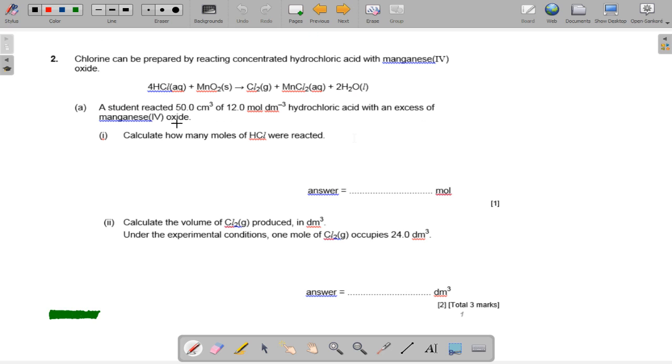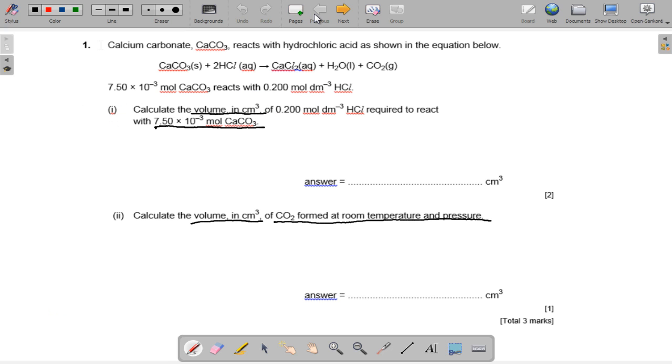We need to calculate how many moles of HCl were reacted, knowing that centimeter cubed of 12 moles per decimeter cubed hydrochloric acid was reacted with manganese oxide. We need to calculate the volume of Cl2 produced in decimeter cubed. I'll give you a five second pause and we'll go through the answers.